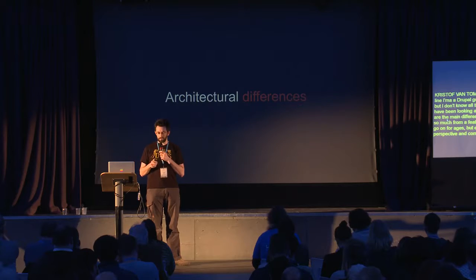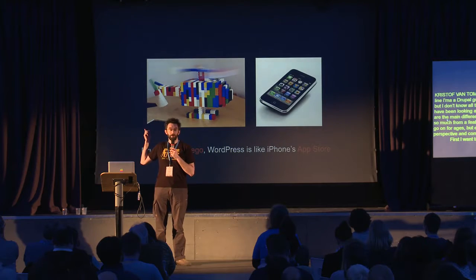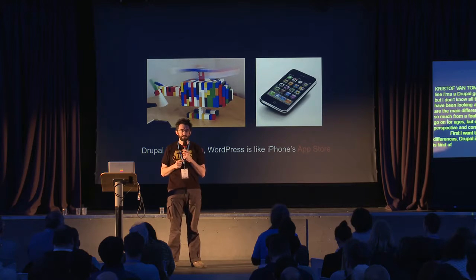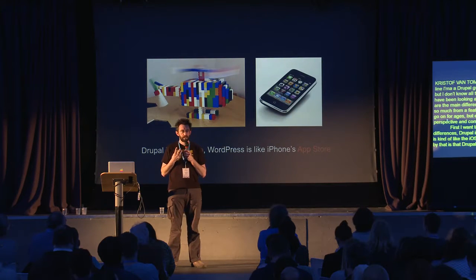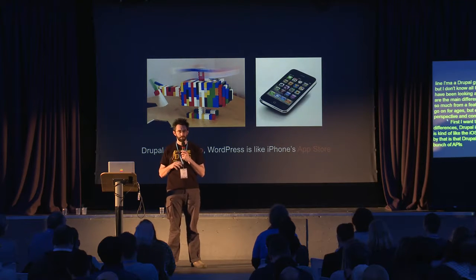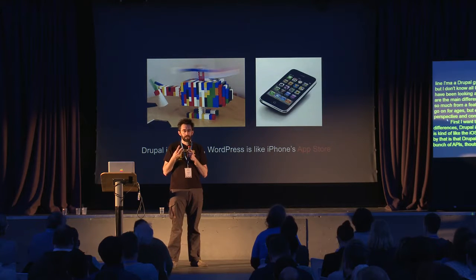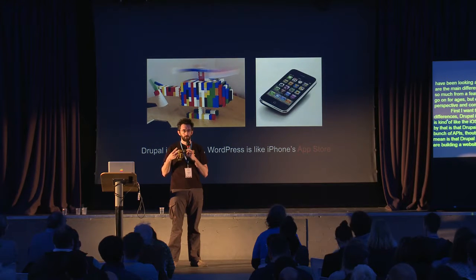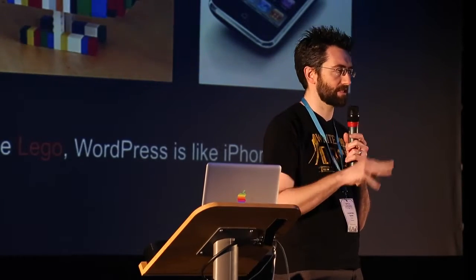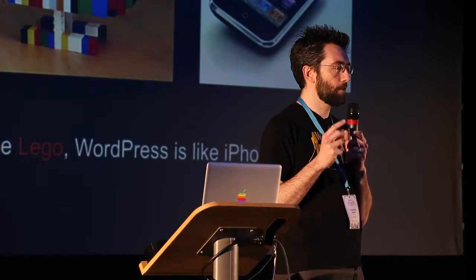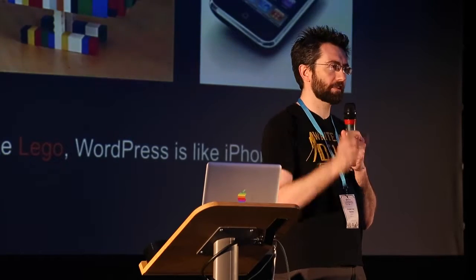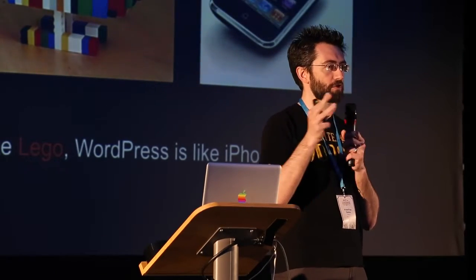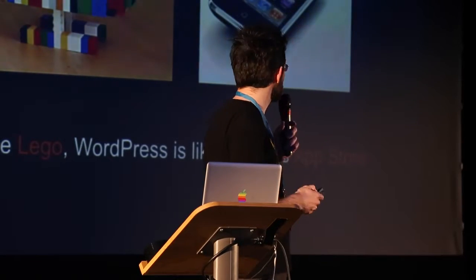I believe that Drupal is kind of like Lego and WordPress is kind of like iOS with the App Store. What I mean is that Drupal is a graphical interface for a bunch of APIs — as a developer, when you're building a website, you can, without writing code, do a lot of really crazy things and build your own stuff much closer to exactly the way you want it. In WordPress, it's more like these vertically well-integrated plugins written for a very specific use case. It's kind of like APIs versus apps, and I think that's a really important difference between the two systems.